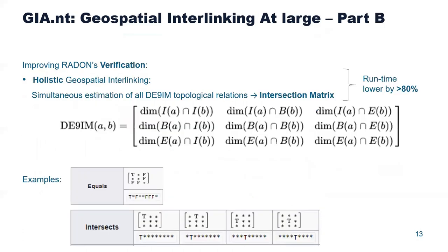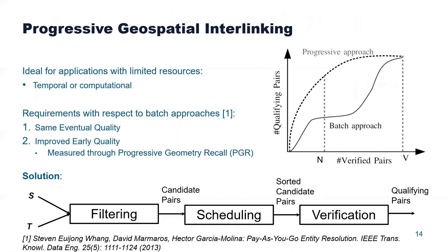For the verification step, we exploit the intersection matrix, which is able to compute simultaneously all topological relations we are interested in — whereas Radon repeats the same process for every topological relation. The intersection matrix is defined where dim corresponds to the dimension of the intersection of two areas: I represents the interior of a geometry, B the boundary, and E the exterior. Using this intersection matrix, we are able to estimate every topological relation using regular expressions as shown here, and in this way we reduce the running time by more than 80%.